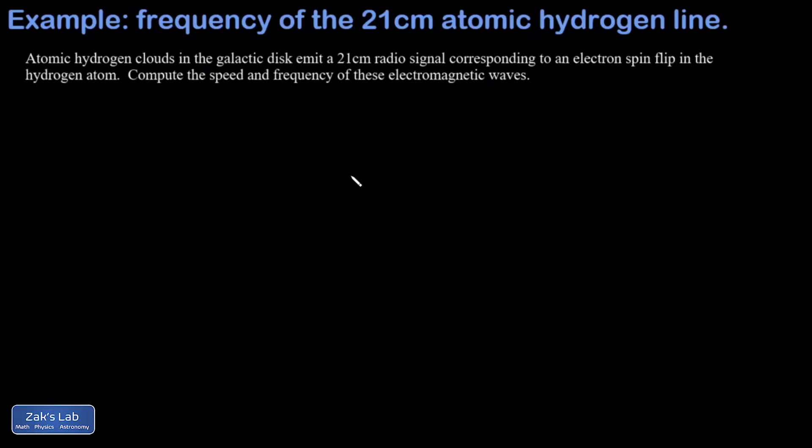This is a quick problem about a radio wave. We're told that atomic hydrogen clouds in the galactic disk emit a 21 centimeter radio signal corresponding to an electron spin flip in the hydrogen atom. It doesn't really matter what that is, but it's interesting. We want the speed and frequency of these electromagnetic waves.